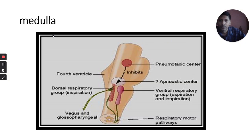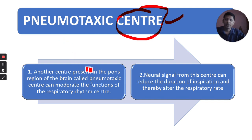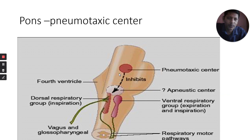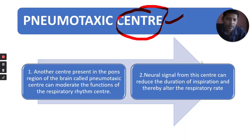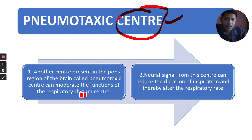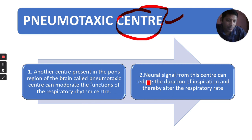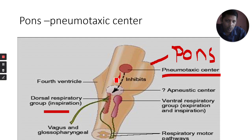The next center is the pneumotaxic center. We have already discussed the respiratory rhythmic center (RRC); now we discuss another center — the pneumotaxic center. This center is present in the pons region of the brain — specifically the pons varolii of the hindbrain. The pons varolii contains a center called the pneumotaxic center, which can moderate the functions of the respiratory rhythmic center. It sends neural signals to the respiratory rhythmic center. A neural signal from this center can reduce the duration of inspiration and thereby alter the respiratory rate.